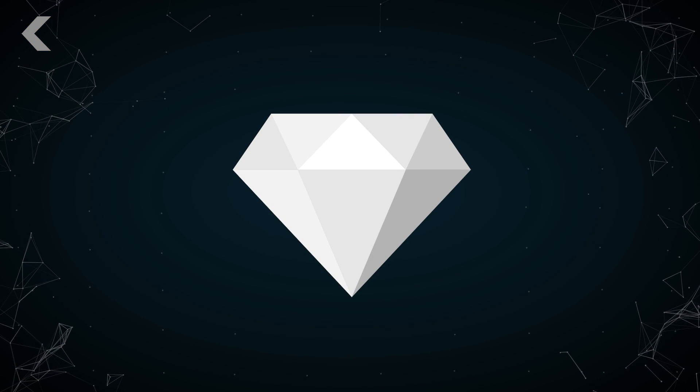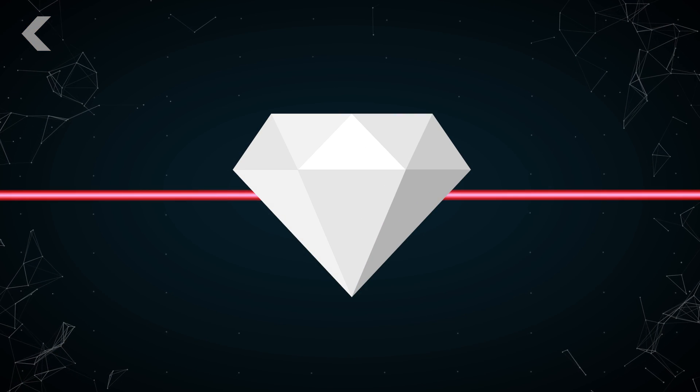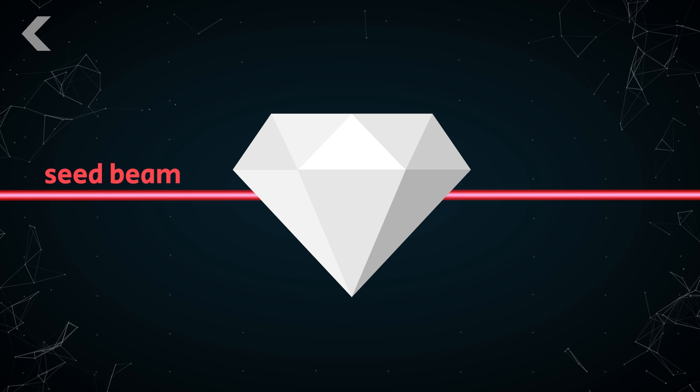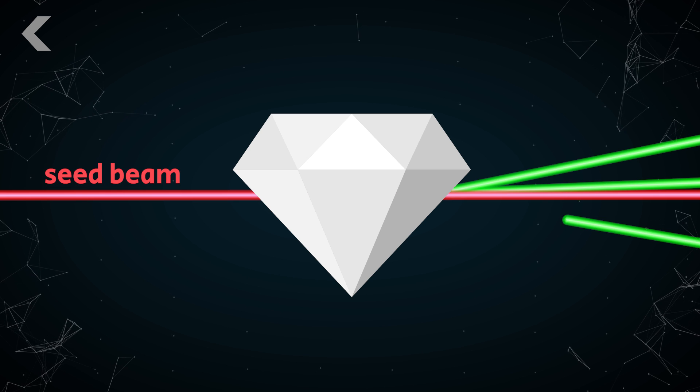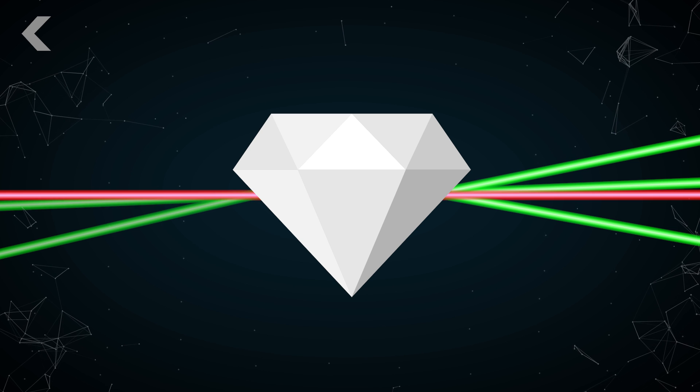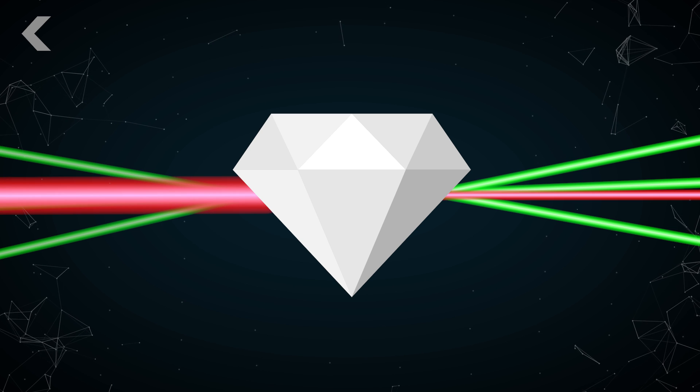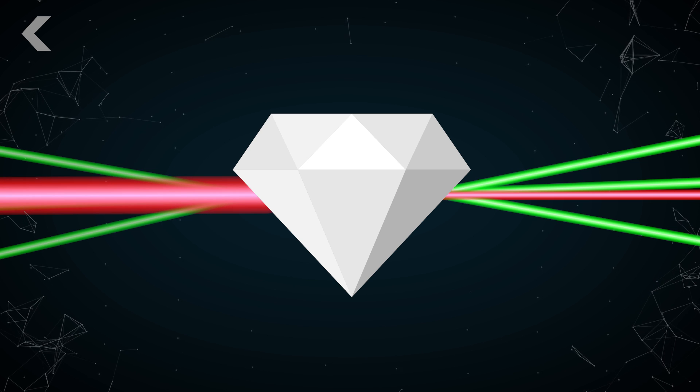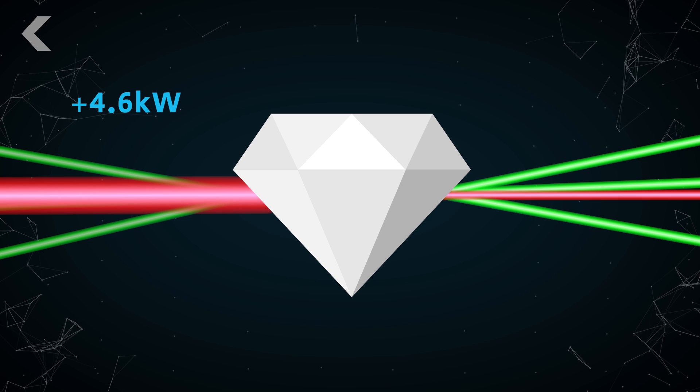They lined up four lasers: one that would shoot straight through the crystal and out the other side, that they called the seed beam, and three that would enter the crystal at an angle, called pump beams. When they were all fired at once, the crystal transferred most of the power of the pump beams to the seed beam, upping its power by almost 4.6 kilowatts.